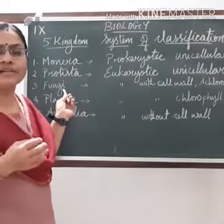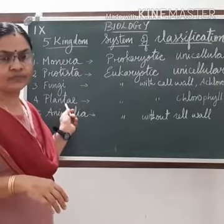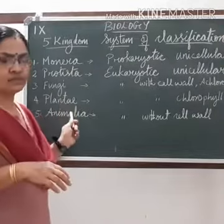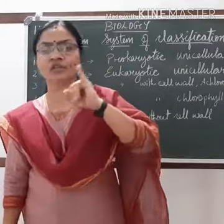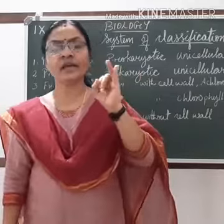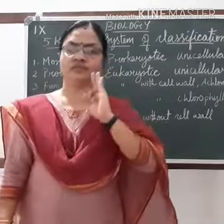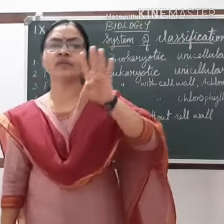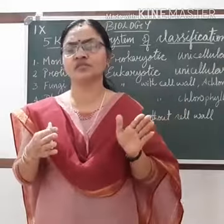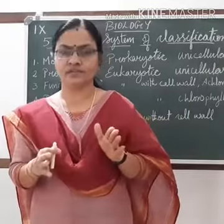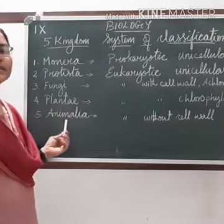All plants which possessed chlorophyll were grouped under Plantae. So the basis of classification into five kingdoms is: whether they have a developed nucleus, whether they are unicellular or multicellular, whether they possess a cell wall, and whether they have chlorophyll pigment. On this basis they classified all organisms into five kingdoms: Monera, Protista, Fungi, Plantae, and Animalia.